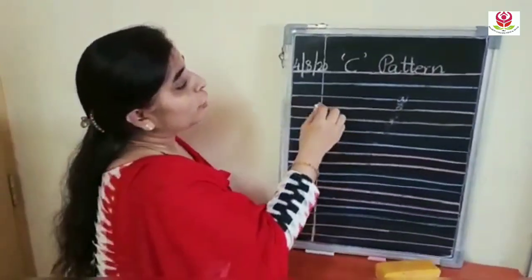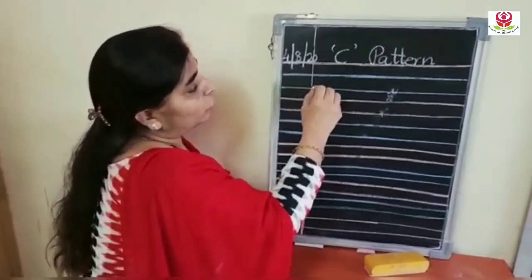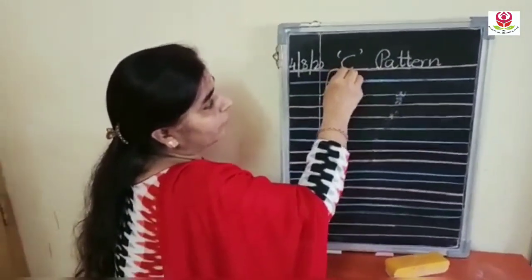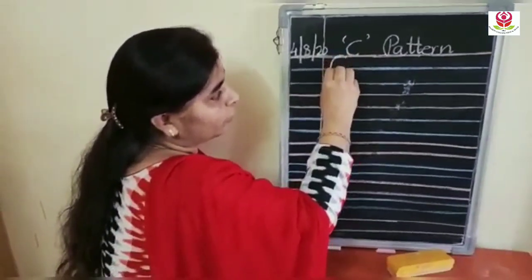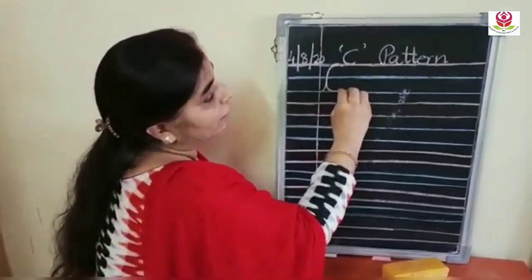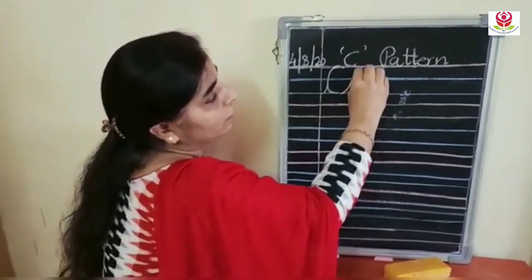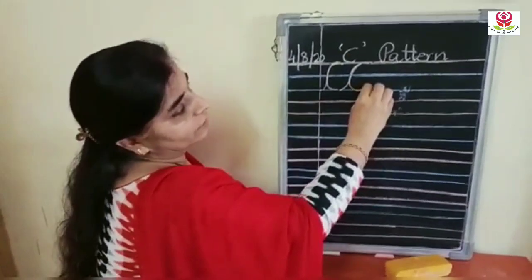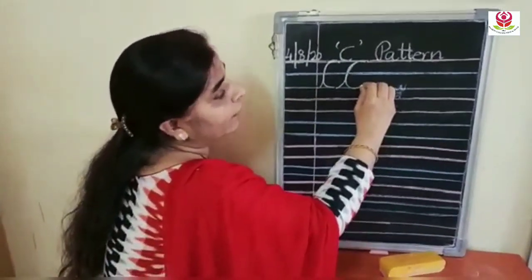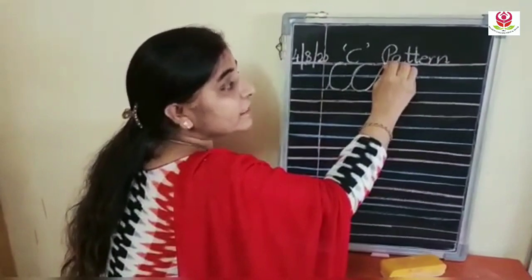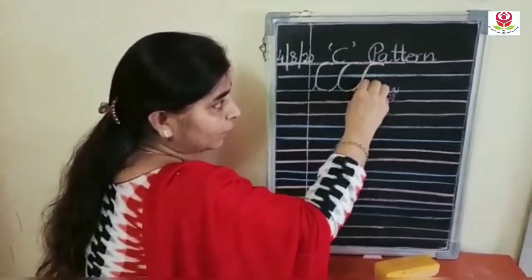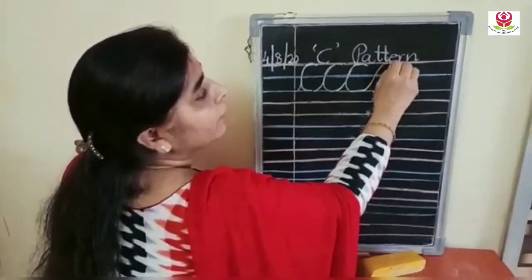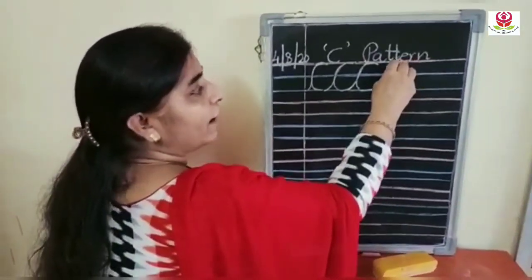Now we will start. You are going to start from the bottom blue line and make a curve. Go up to the red line. Now again you are going to make a curve and form a C. Again you are going to write C here down.